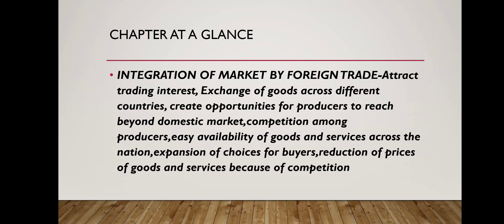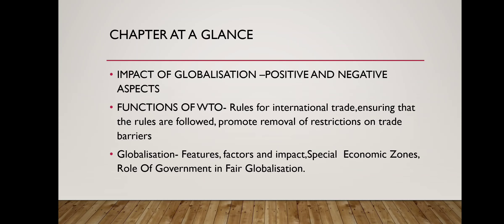There is now easy availability of goods and services across nations. This also means expansion of choices for buyers, since the chapter deals with both producers and consumers. Globalization gives opportunities to producers while giving buyers choices to purchase according to their purchasing capacity. It also reflects a reduction in prices of goods and services due to competition.